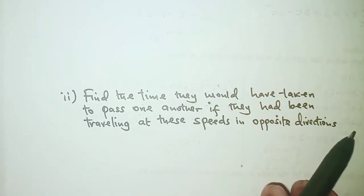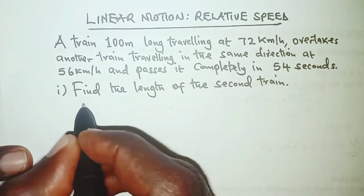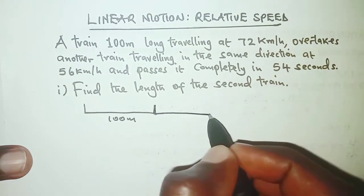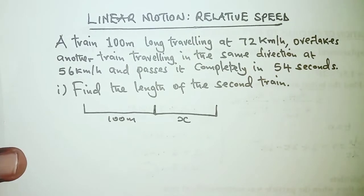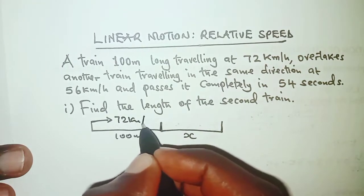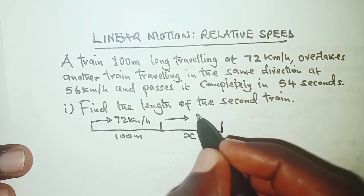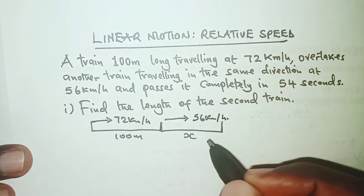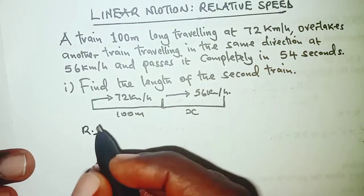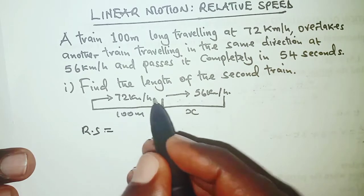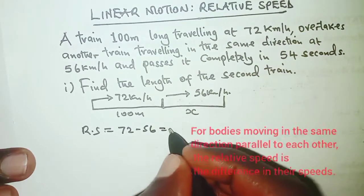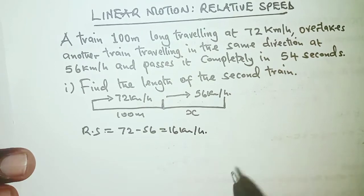We have a train which is 100 meters long overtaking another train whose length is x — we do not know the length. The first train is moving at 72 kilometers per hour and the second train is moving at 56 kilometers per hour. We need to determine the relative speed, which is obtained as the difference between their speeds: 72 minus 56, which is 16 kilometers per hour.